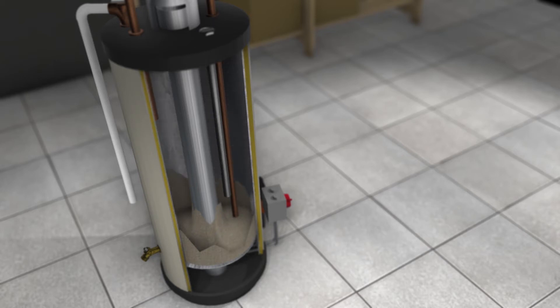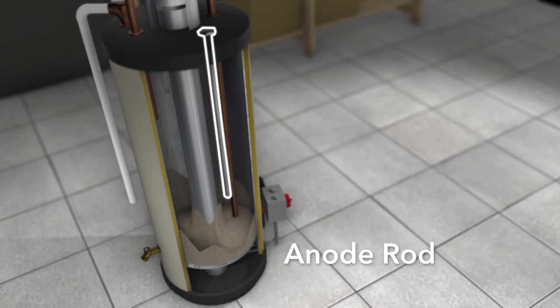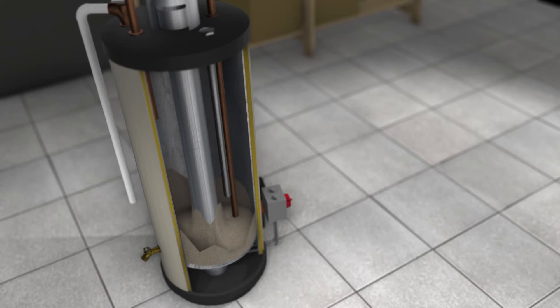However, your water heater has a built-in safety device called an anode rod, sometimes called a sacrificial anode rod. It corrodes, protecting the metal lining of your water heater.